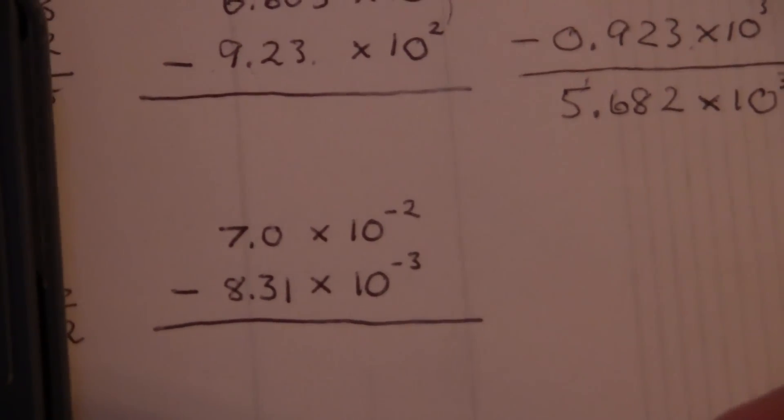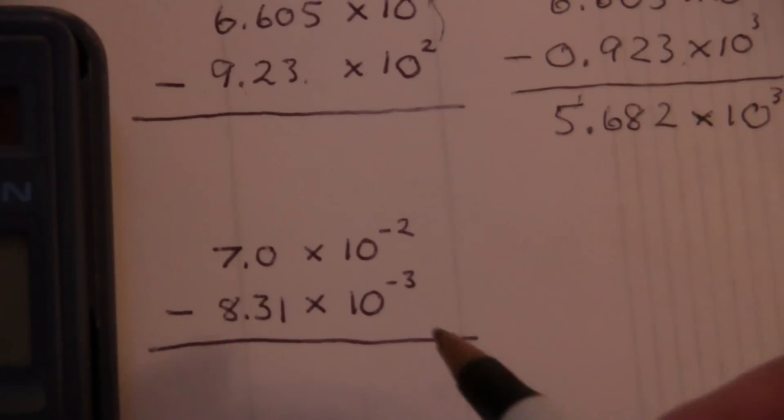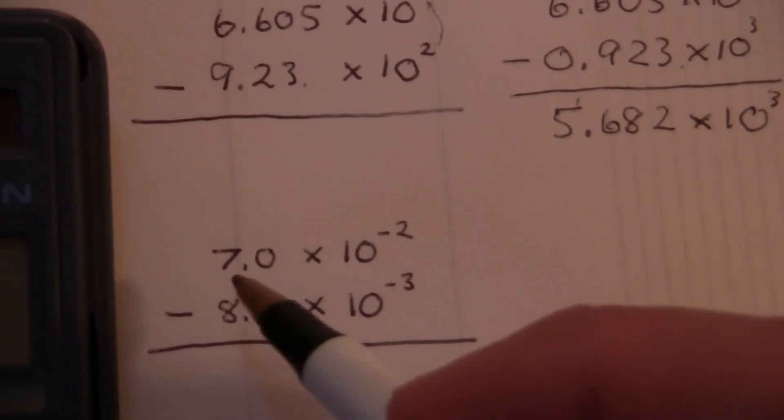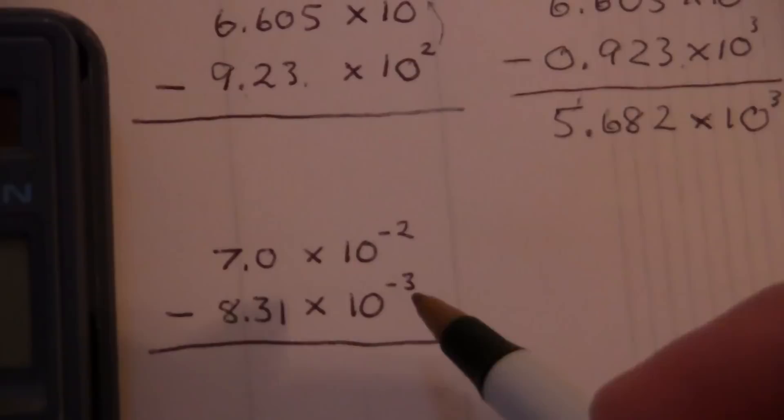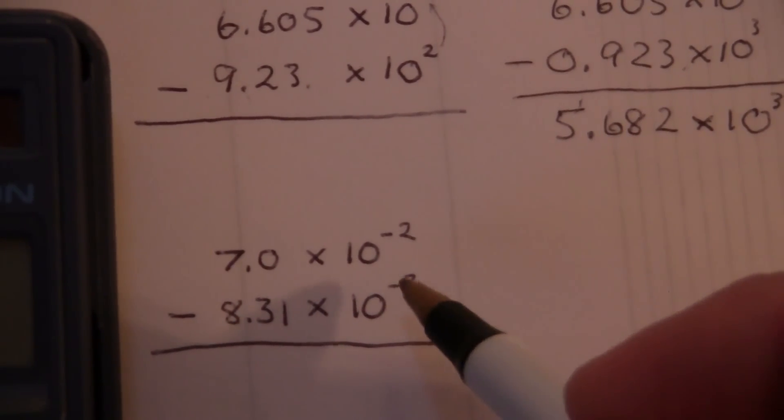Okay, I have a few more of these for added practice. 7 times 10 to the negative 2 minus 8.31 times 10 to the negative 3.